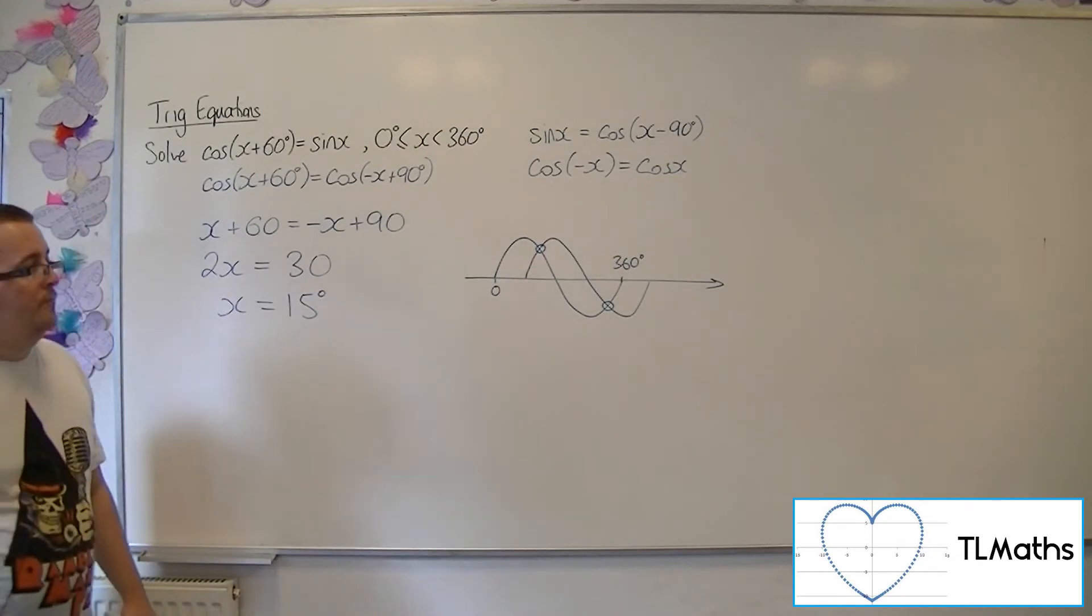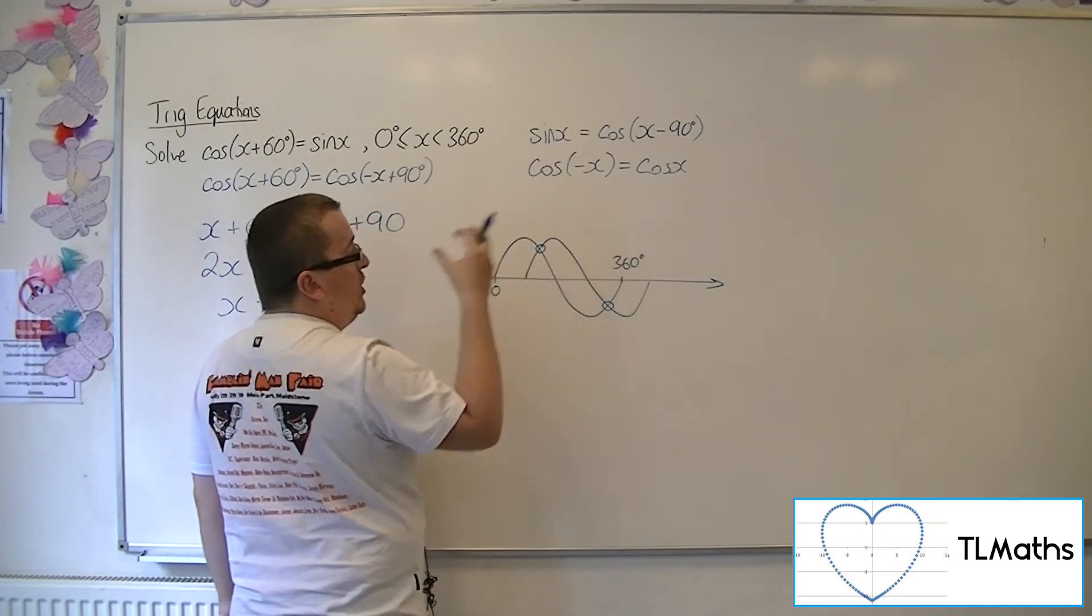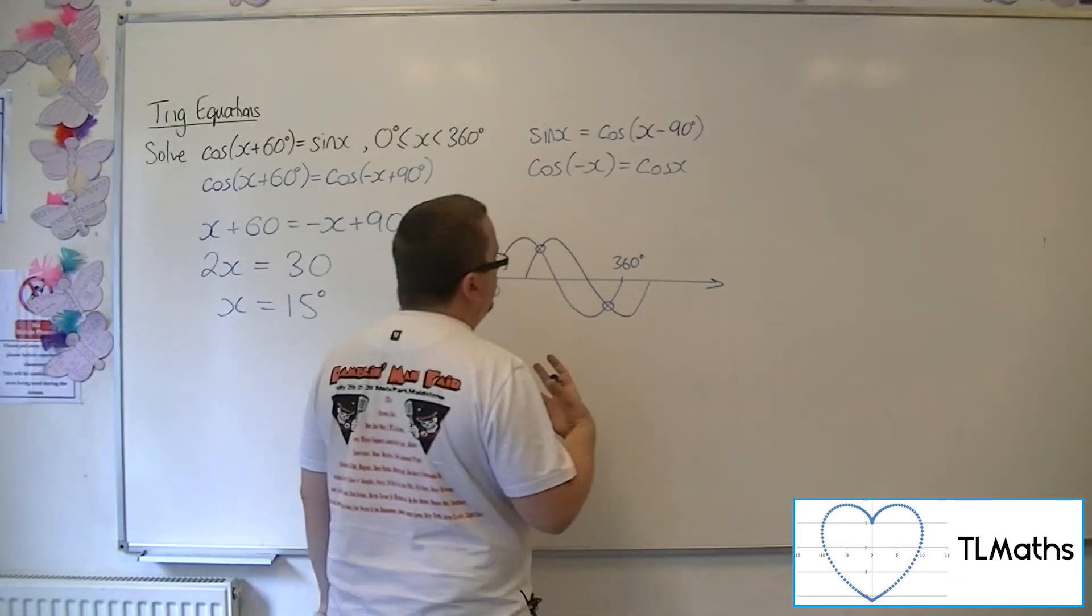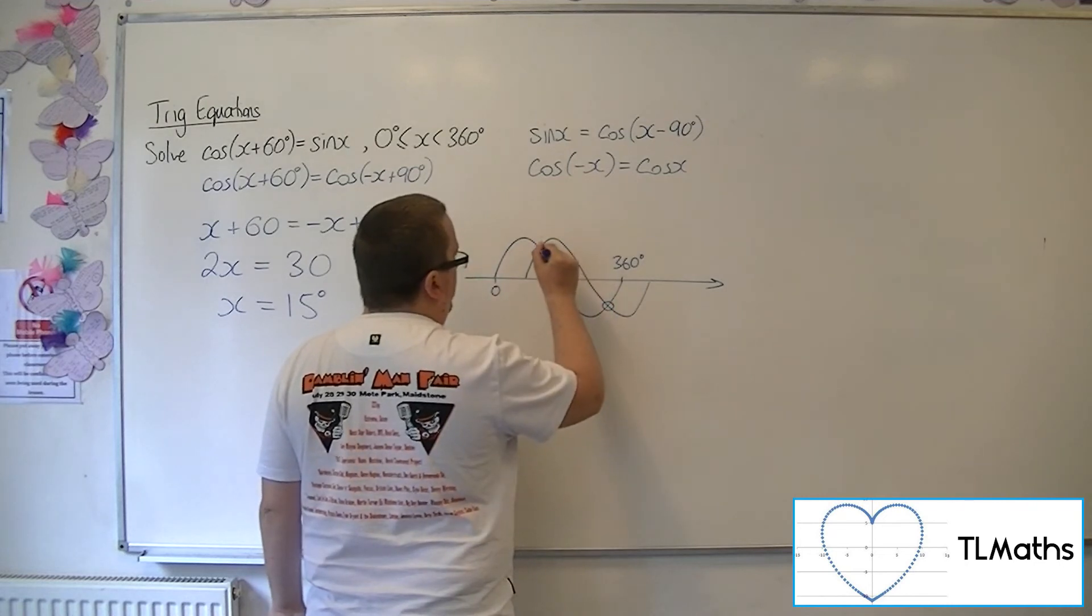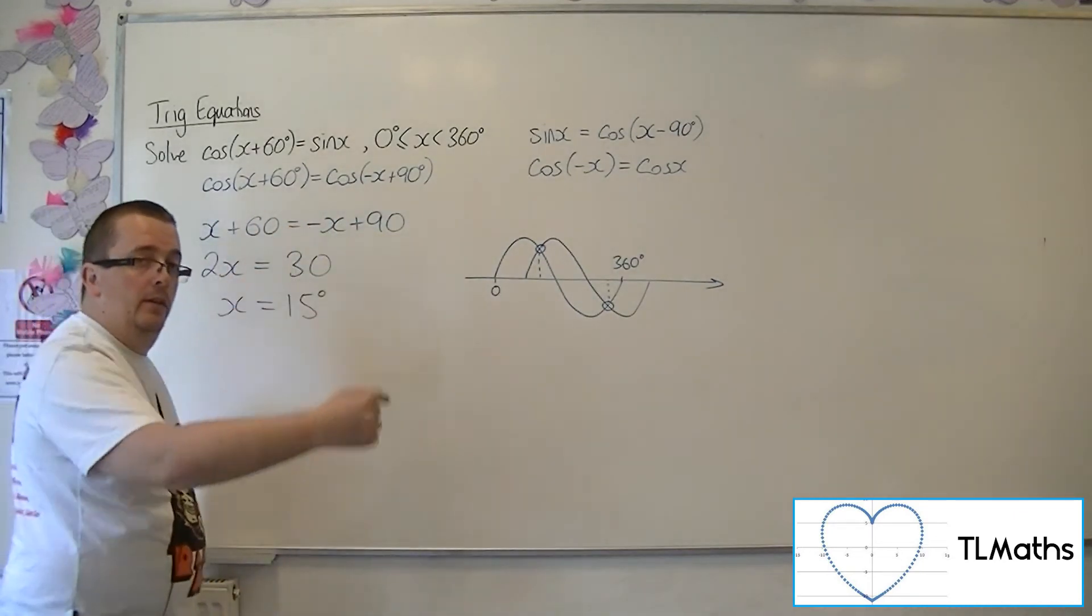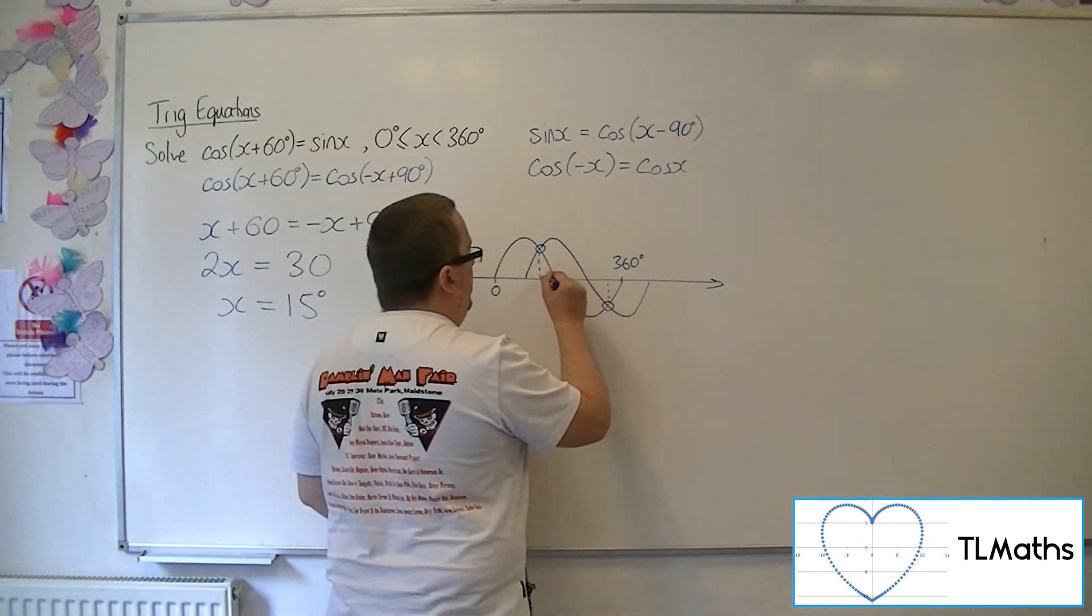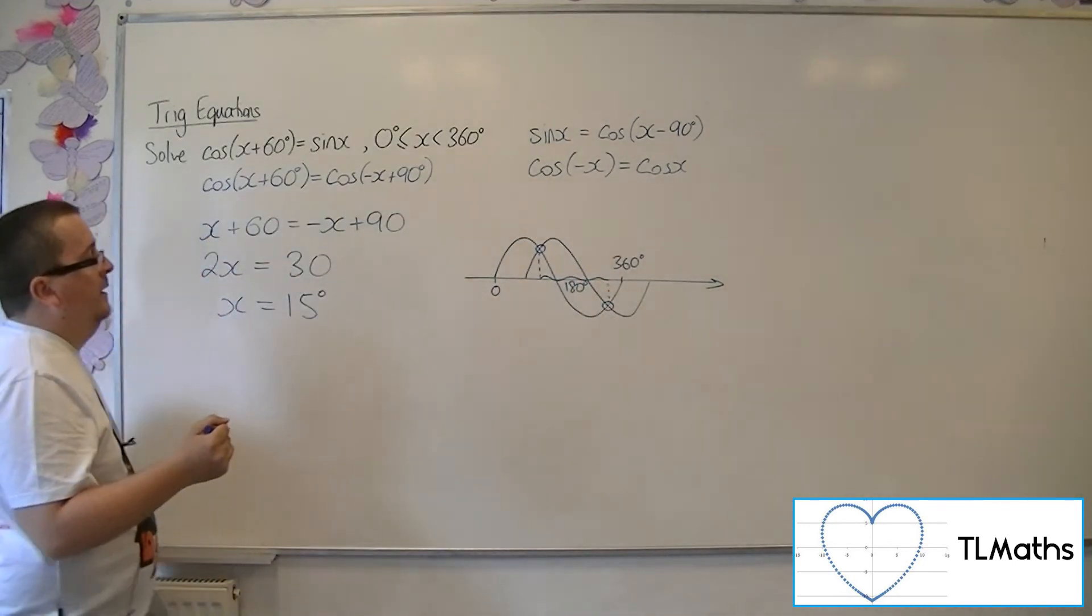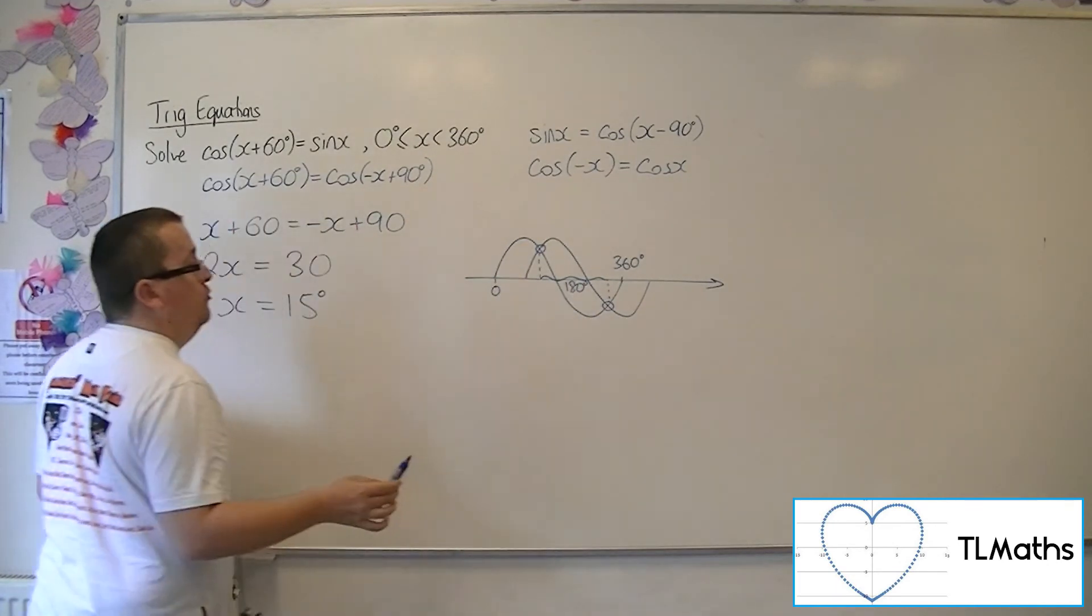Because these are the same shaped curve, no transformation has occurred. So this position and this position must be 180 degrees apart, because they're going to match each other twice every 360 perfectly. So this distance must be 180 degrees. So if one of the solutions is at 15 degrees, the other solution must be 180 degrees away.